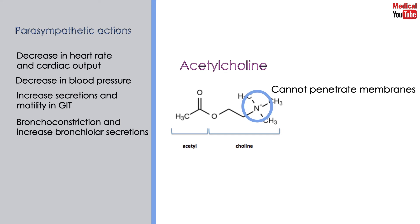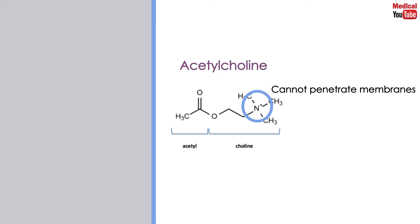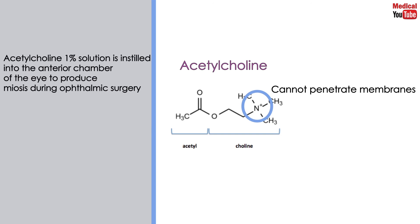Bronchoconstriction and increased bronchiolar secretions. In the urinary bladder, it increases the tone of the detrusor muscle, causing urination. In the eye, acetylcholine is involved in stimulation of ciliary muscle contraction for near vision, and in the constriction of the circular muscle, causing miosis. Acetylcholine 1% solution is instilled into the anterior chamber of the eye to produce miosis during ophthalmic surgery.